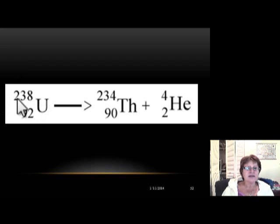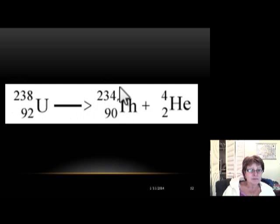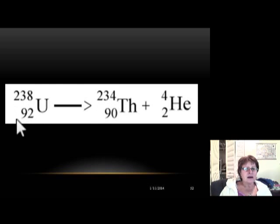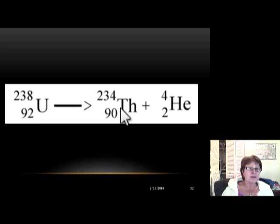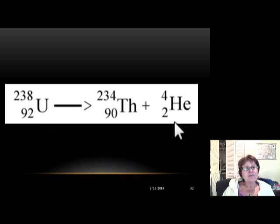Uranium has an atomic number of 92 and a mass number of 238. When the alpha particle comes out, we take 4 from the mass number: 238 minus 4 gives us 234. For the atomic number, we take 2 from 92, giving us 90. Looking at the periodic table, atomic number 90 is thorium.